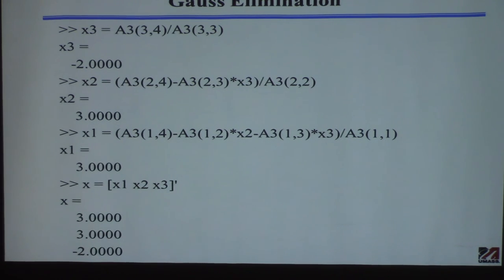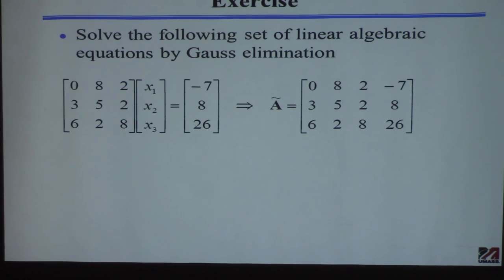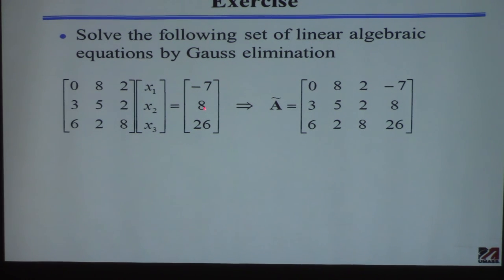The real point of this exercise is to give you practice doing calculations involving matrix rows and elements. Your job now is to solve a similar system of equations. Notice there's a zero in the first row, so you'll want to switch some rows before you begin. Create the matrix A, create vector b, form the augmented matrix, and then work through the row operations to find the solution.